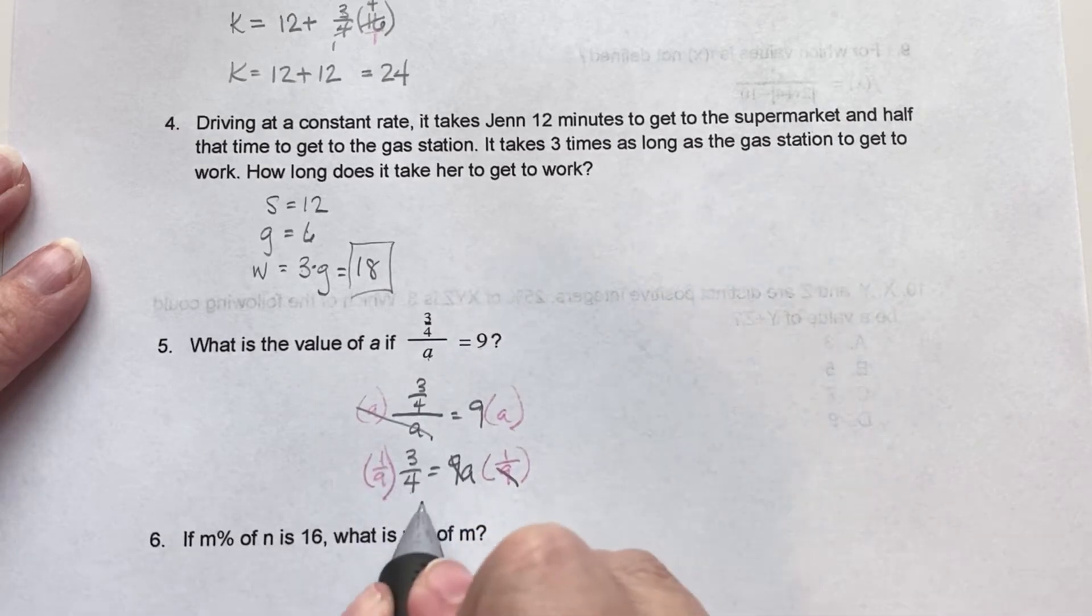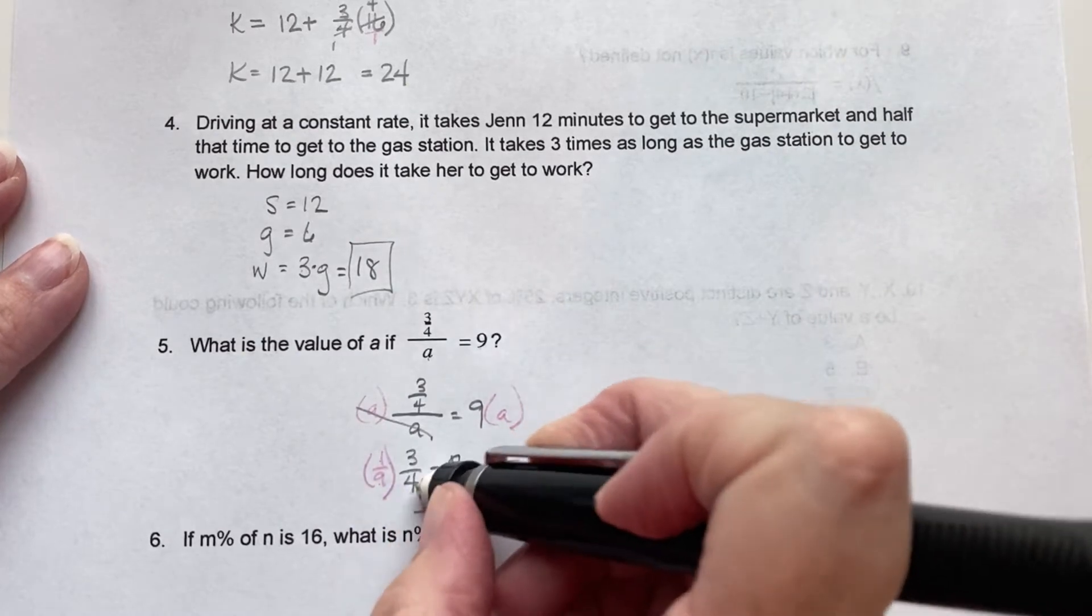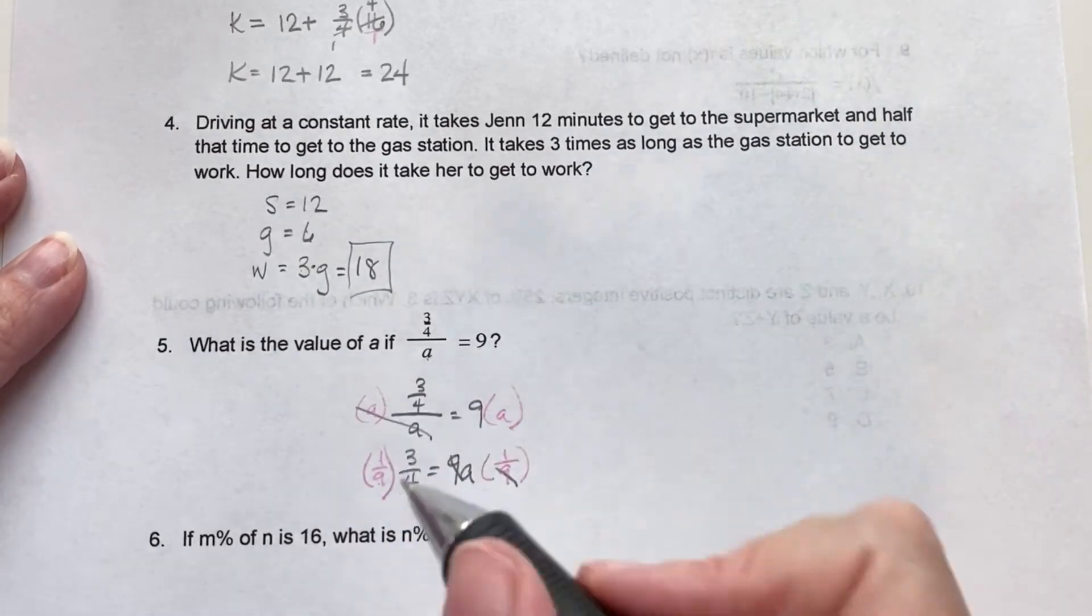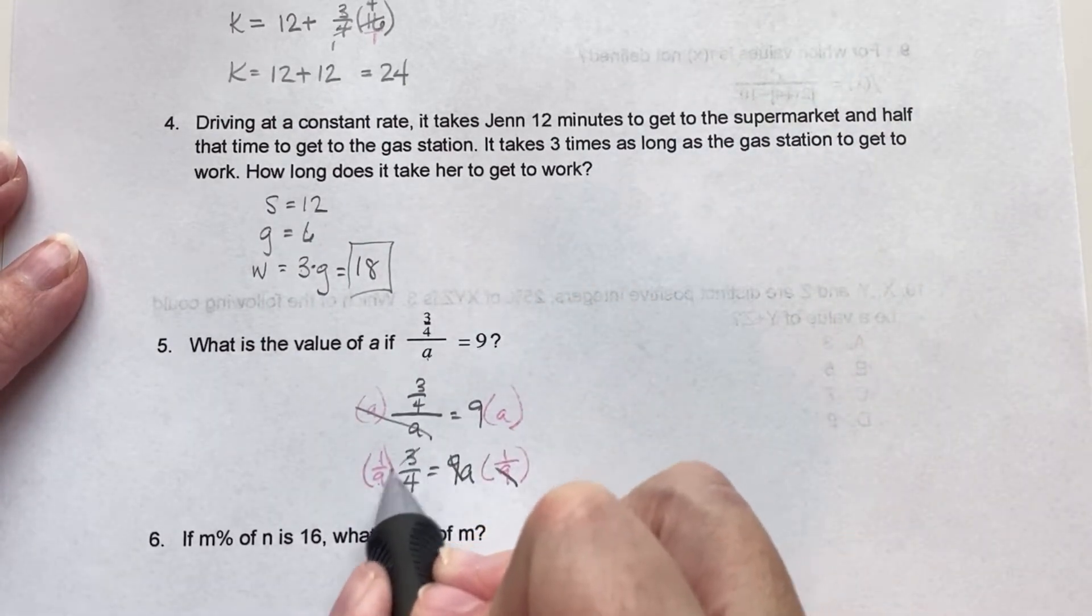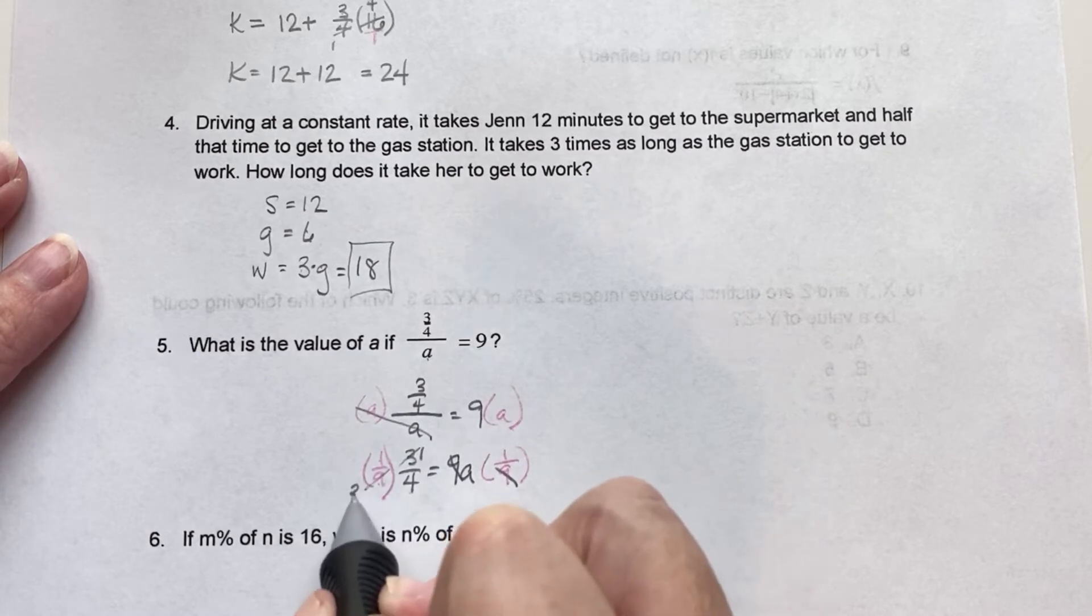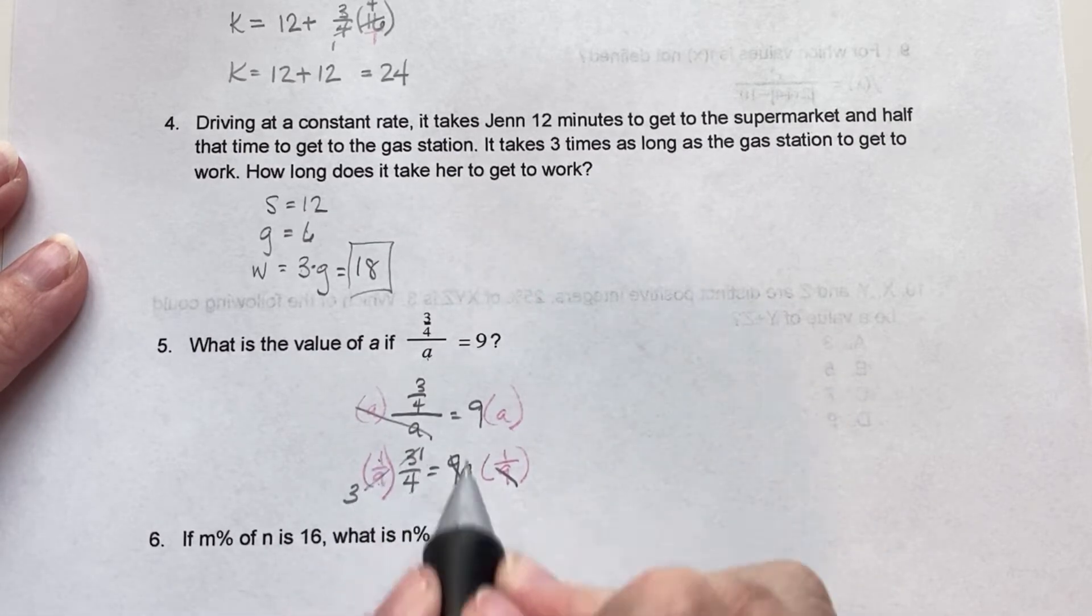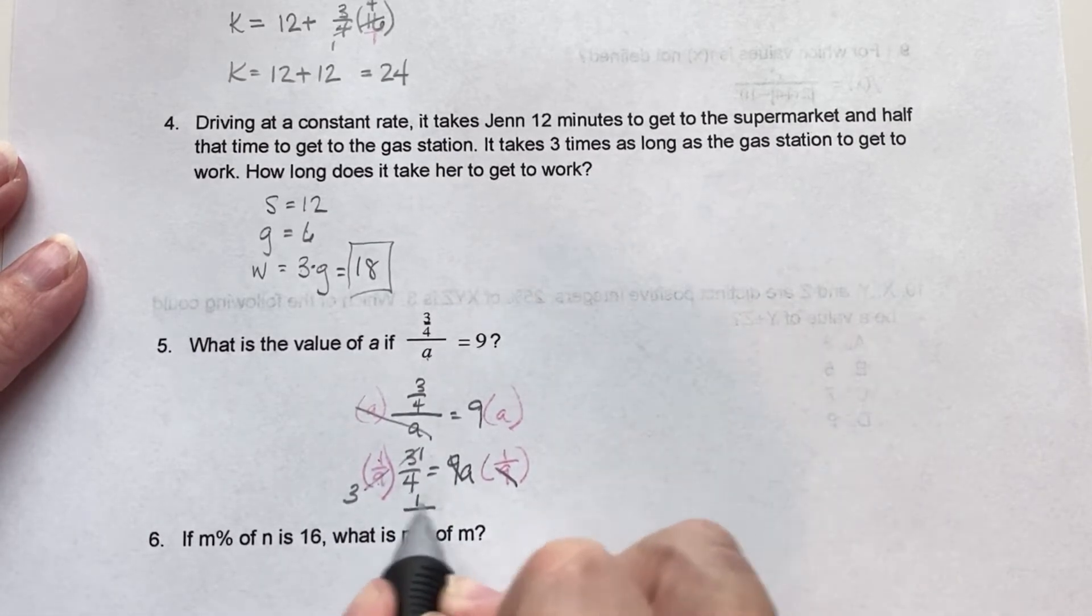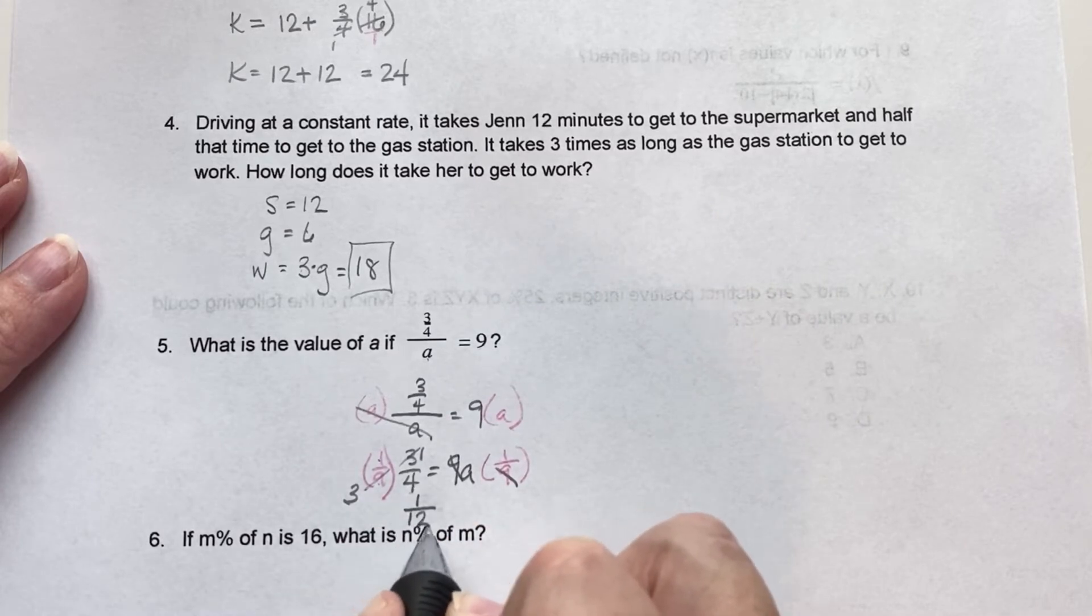So that way that cancels. And then 1 times 3, 3, 9 times 4. Hold on. We can actually cross cancel here. So 3 goes into 9 3 times. So 1 times 1, 1. 3 times 4, 12. And that equals a.